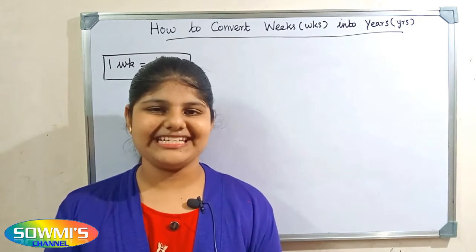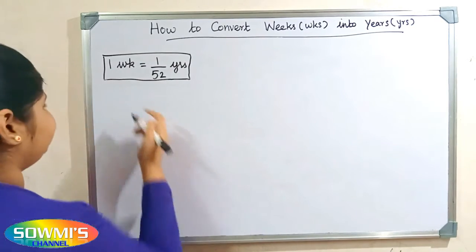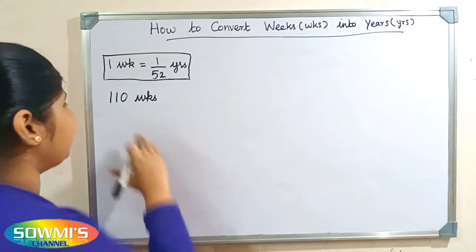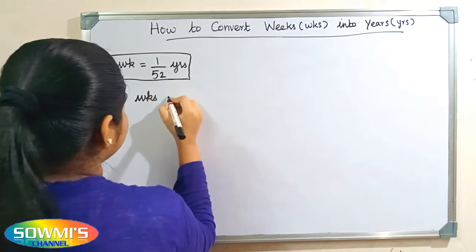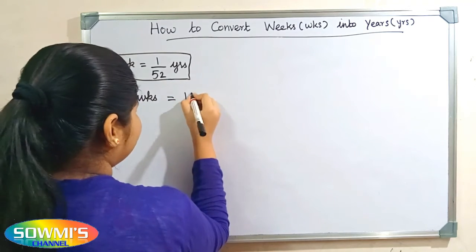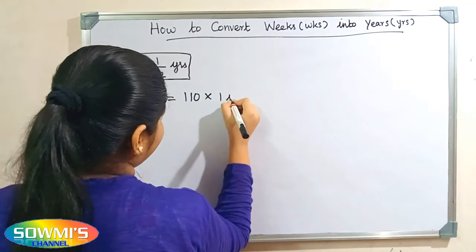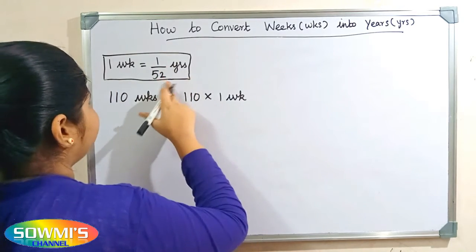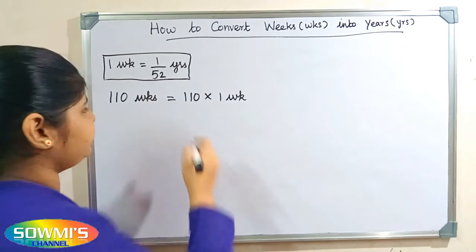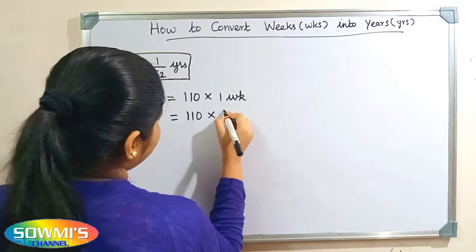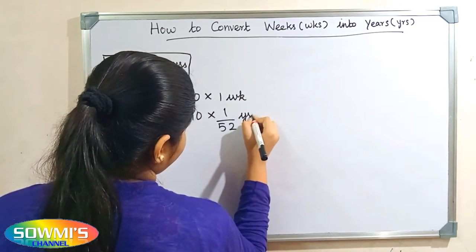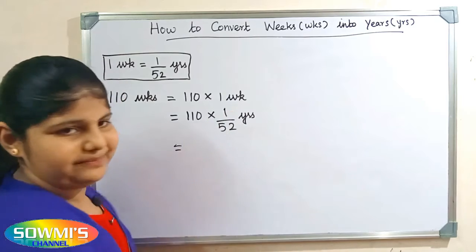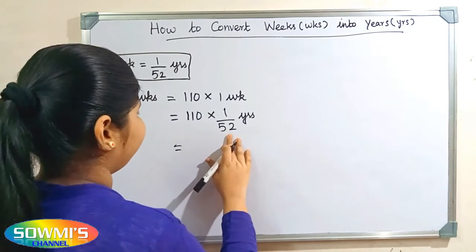Now we will take one more example. We can take 110 weeks. We need to find how many years are there in 110 weeks. So 110 weeks can be written as 110 multiply 1 week. Applying the formula, we substitute 1 by 52 years in the place of 1 week, giving us 110 multiply 1 by 52 years, which is 110 by 52 years.